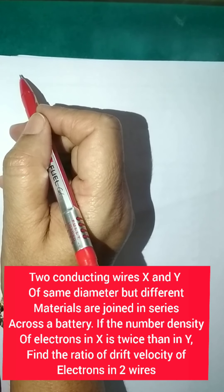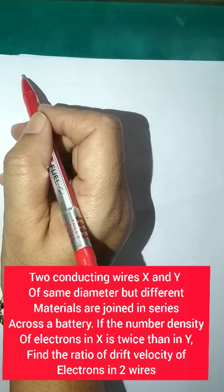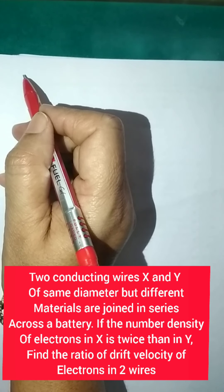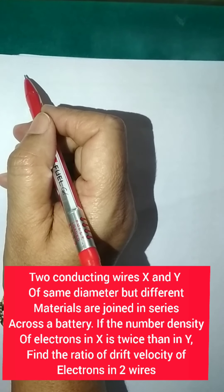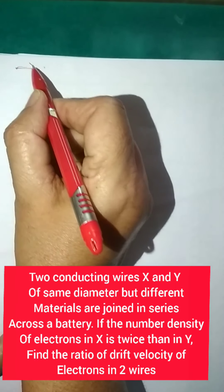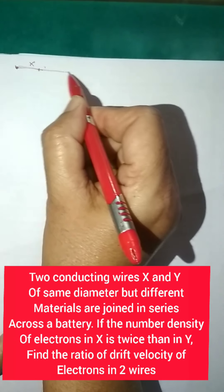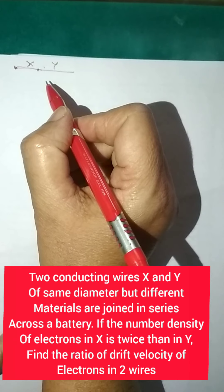Two conducting wires X and Y of the same diameter but different materials are joined in series across a battery. So you got two wires X and Y, and they are connected in series. Alright.